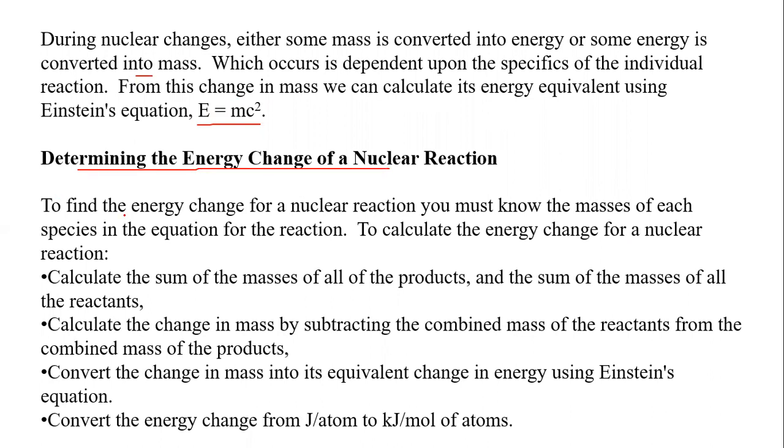Determining the energy change of a nuclear reaction: To find the energy change for a nuclear reaction, you must know the mass of each species in the equation of the reaction. Calculate the sum of mass of all the products and sum of the mass of all the reactants. Calculate the change in mass by subtracting the combined mass of the reactants from the combined mass of the products. Convert the change in mass into equivalent change in energy using Einstein's equation. Convert the energy change from joule per atom to kilojoule per mole of atoms.